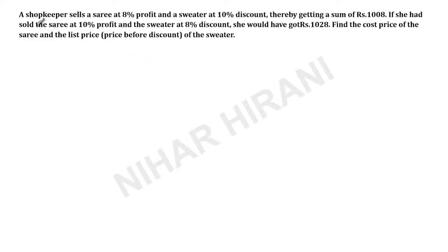Hello, let us solve this question. A shopkeeper sells a saree at 8% profit and a sweater at 10% discount, thereby getting a sum of Rs. 1008. If she had sold the saree at 10% profit and sweater at 8% discount, she would have got Rs. 1028. Find the cost price of the saree and the list price before discount of the sweater.